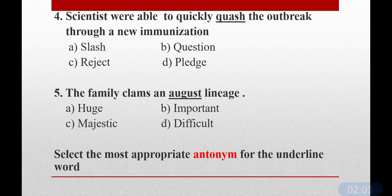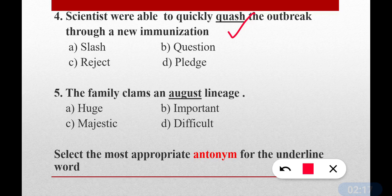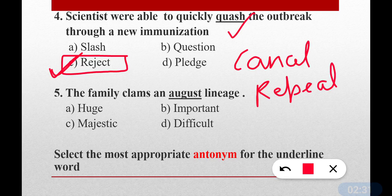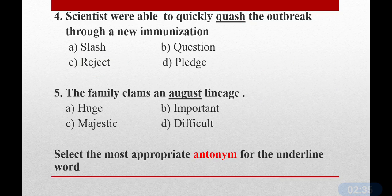Question number four: Scientists were able to quickly quash the outbreak through a new immunization. As I told in the previous 50 MCQs of synonyms, the correct answer here is reject — option C. Quash means reject, cancel, repeal — 'adla vapas karna', reject karna. All of these are synonyms. Quash is an important word.